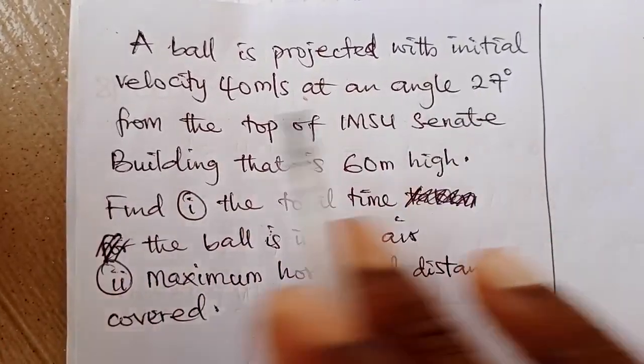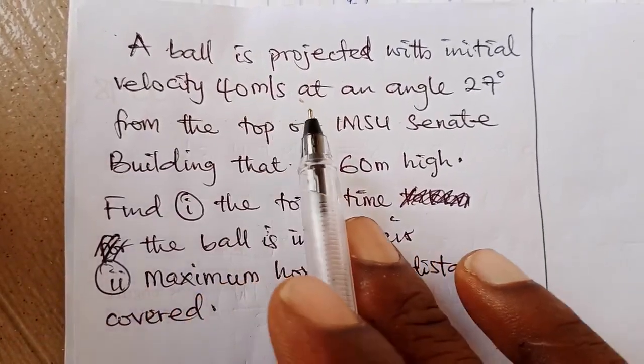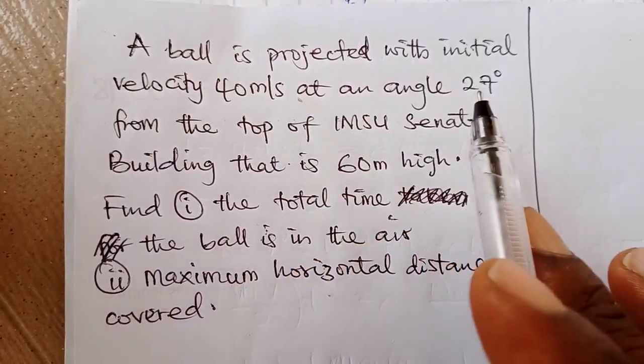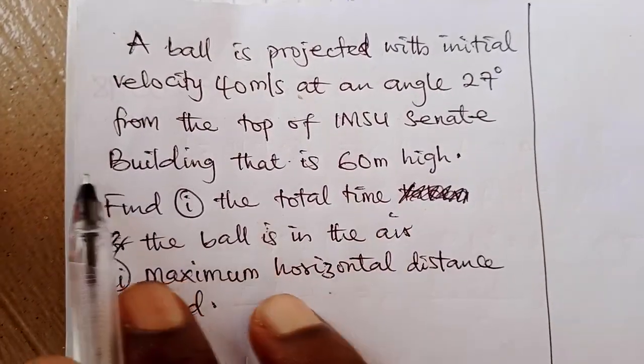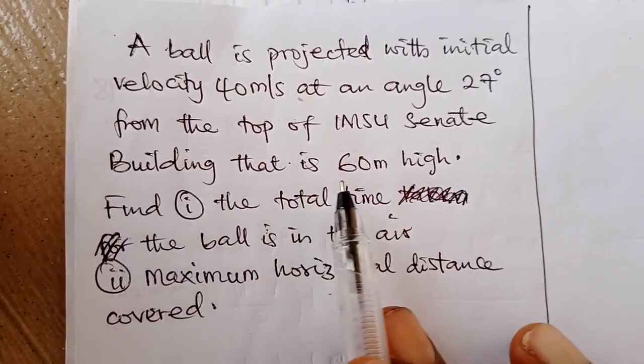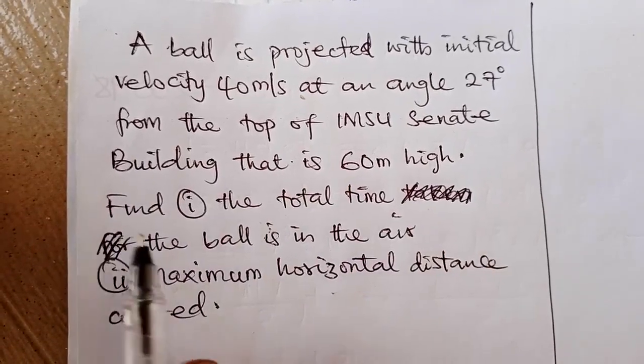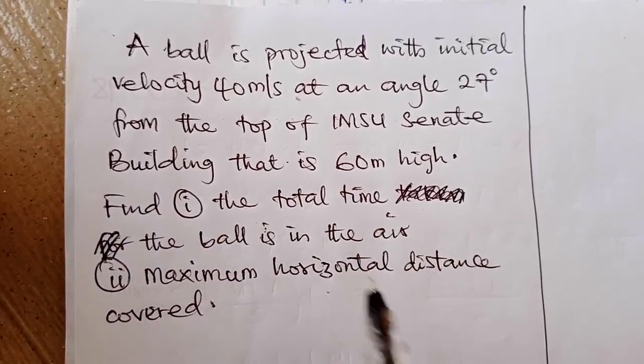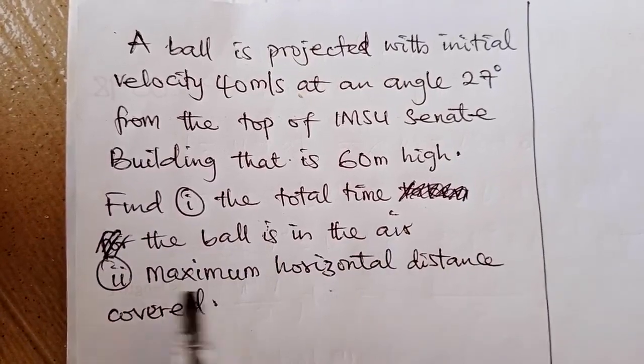A ball is projected with initial velocity of 40 meters per second at an angle of 27 degrees from the top of a building that is 60 meters high. Find the total time the ball is in the air and the maximum horizontal distance covered.